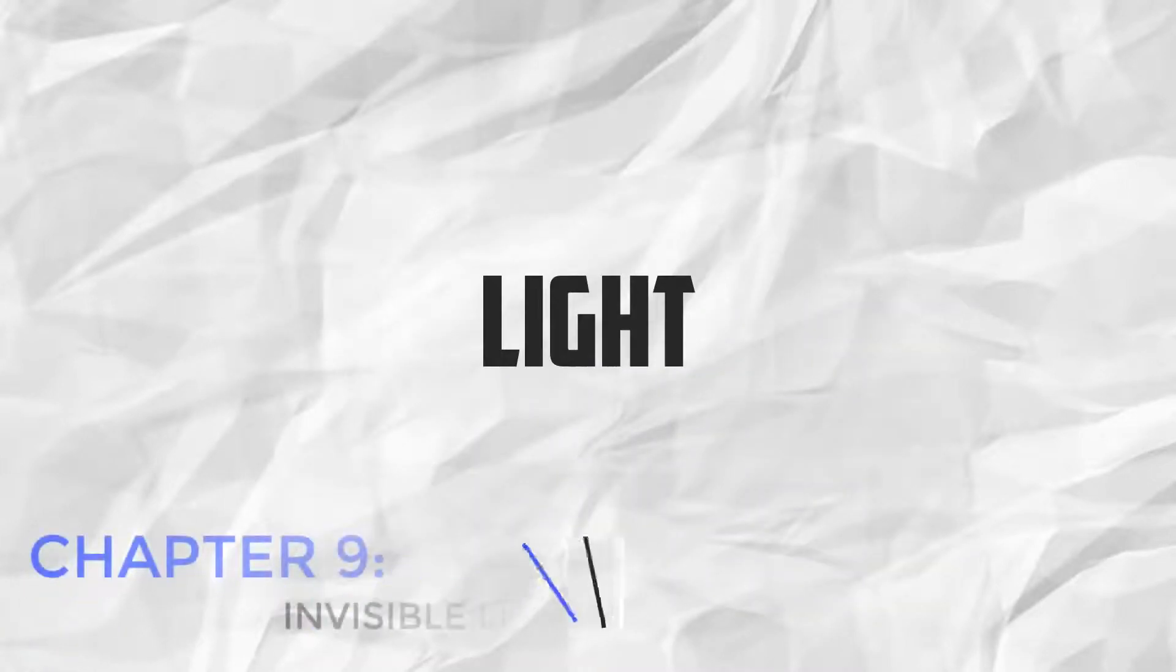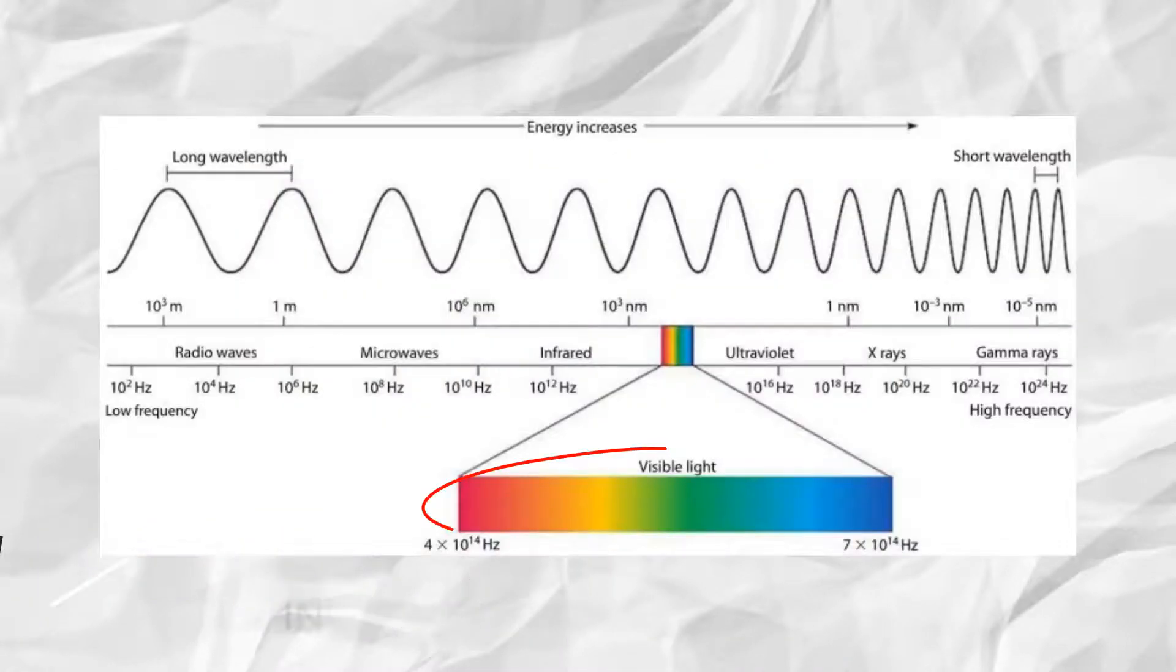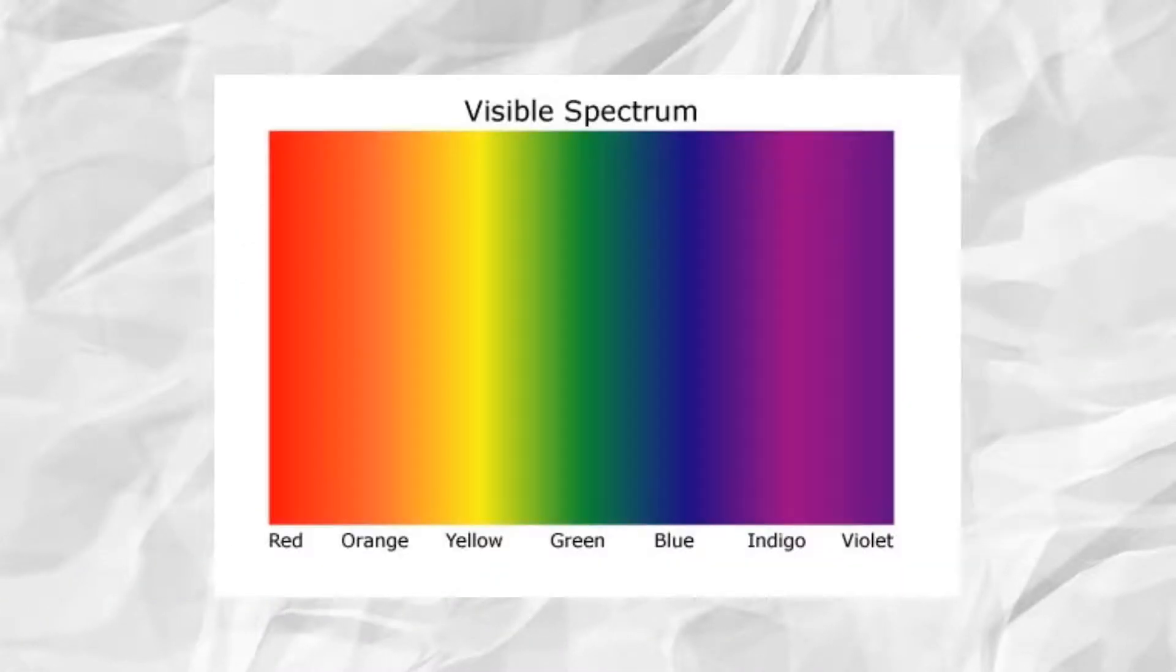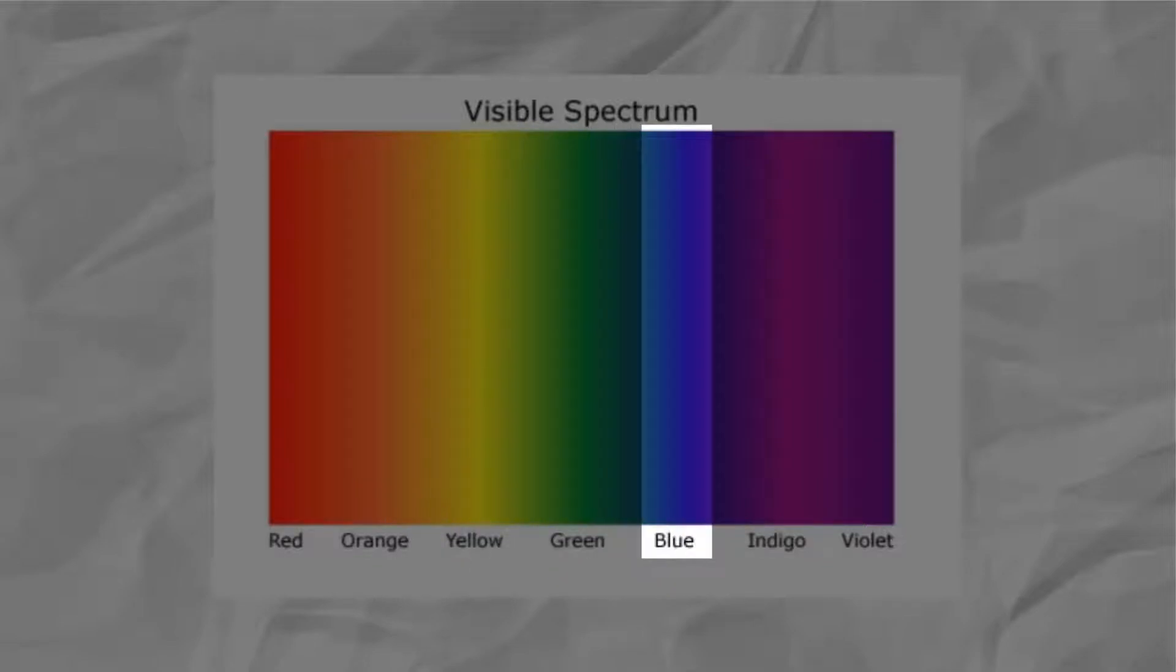Chapter 9, Light. Even though it might not seem like it, there's a lot more light than the light we see. We see what is called visible light. Red, orange, yellow, green, blue, indigo, violet. People used to believe that this was the only light that existed.